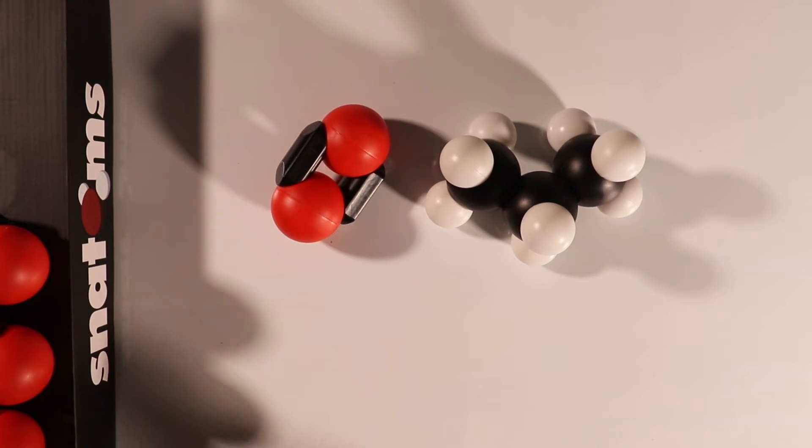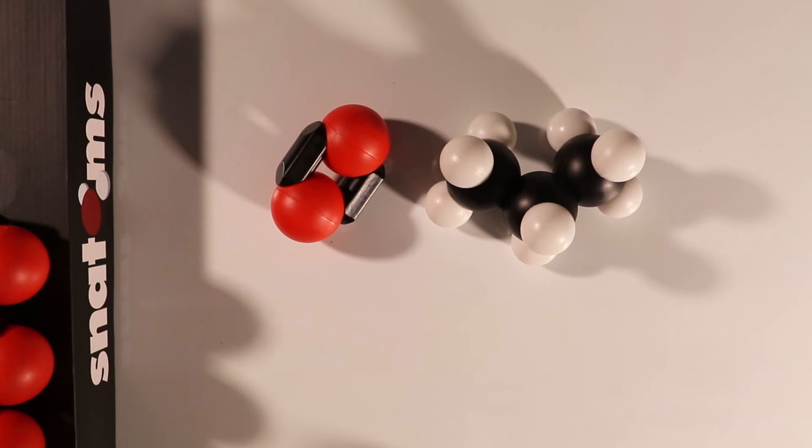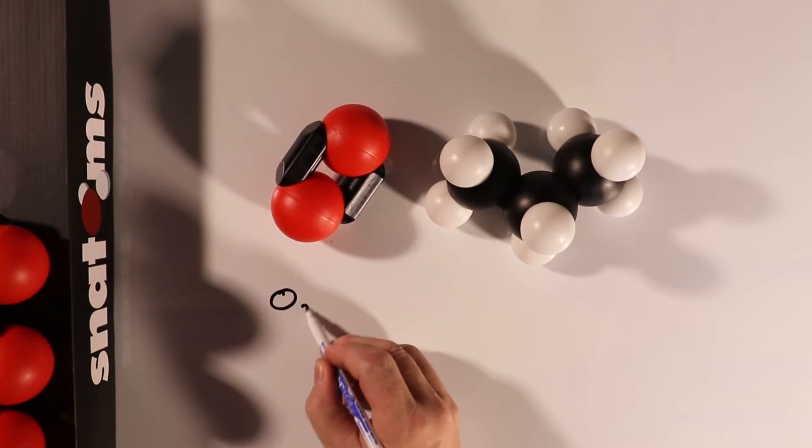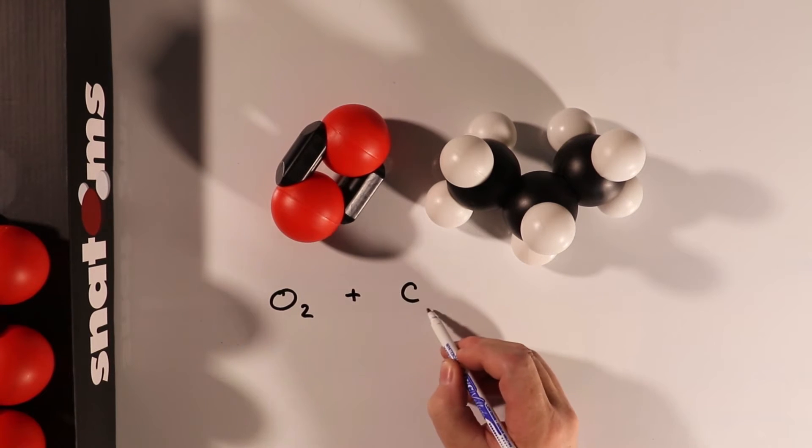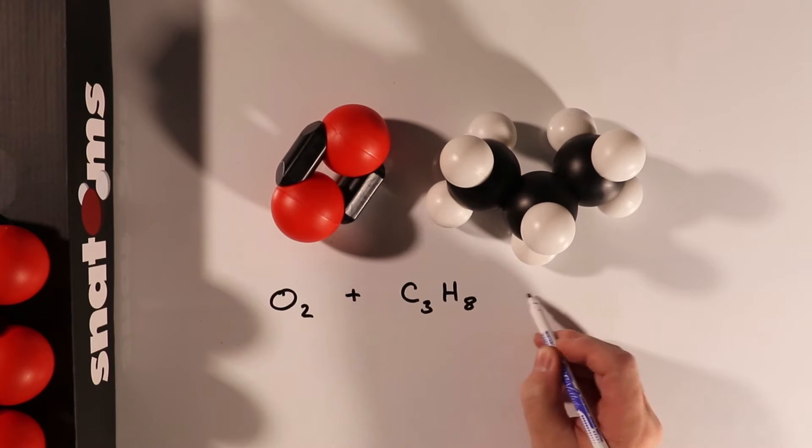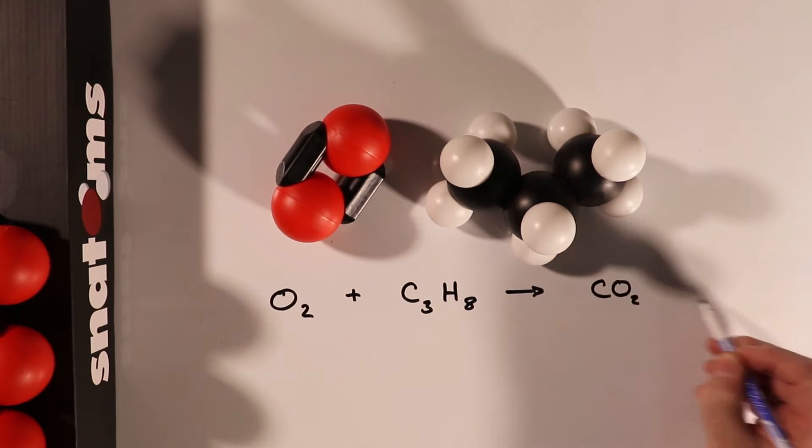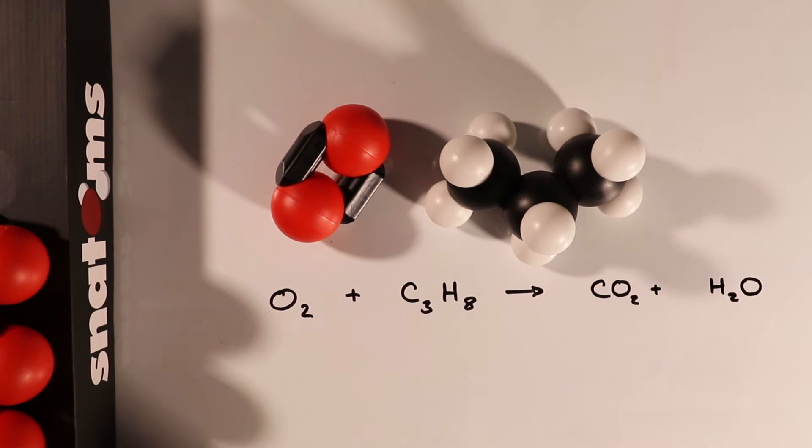We start off with one molecule of propane reacting with one molecule of oxygen. We write down the equation so we can balance it. Oxygen plus propane C3H8 goes to give us carbon dioxide plus water. Let's start the reaction.